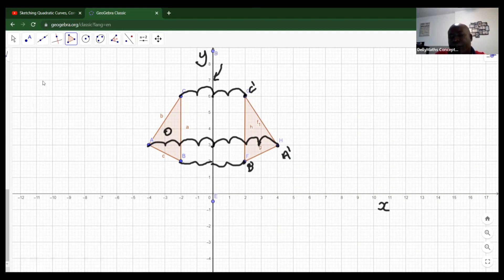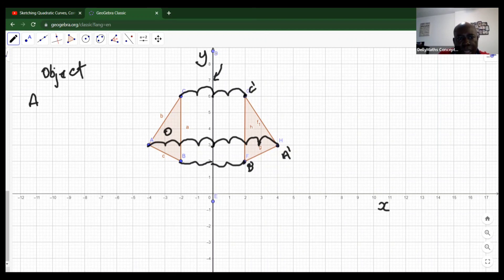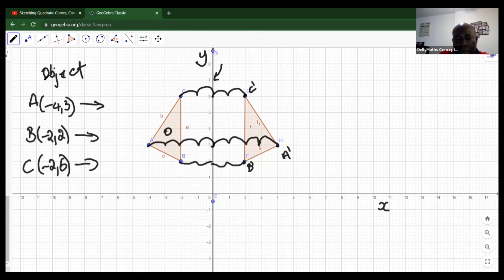With the reflection now, let us look at the coordinates for the object. The coordinate for A was negative four, three. The coordinate for B was negative two, two. The coordinate for C was negative two, six.